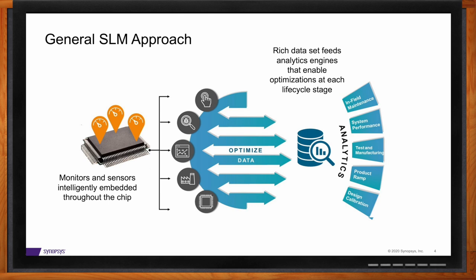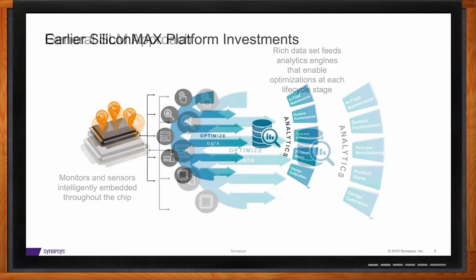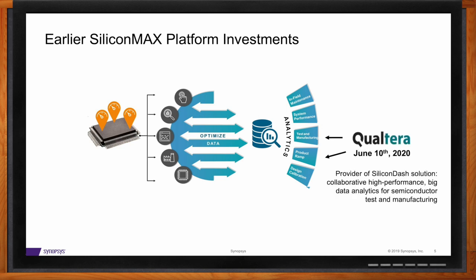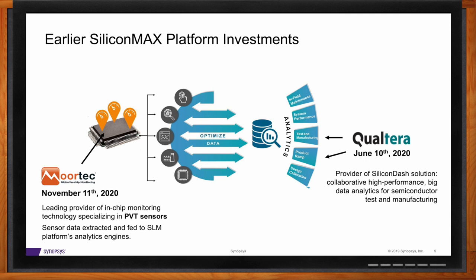As we developed this platform, we realized there were holes to fill for the most comprehensive capabilities, so we've been acquiring key components. One earlier acquisition was Qualterra in June 2020 — the leading provider of high-volume production analytics, which we're using as the basis for all our analytics going forward. More recently, we acquired MoreTech, leaders in PVT sensors, giving us environmental understanding of the chip — process, voltage, and temperature — which is critical at lower nodes like seven nanometers and below.